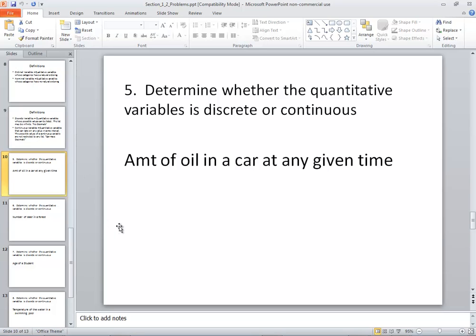Let's look at our first example here. Determine the quantitative variable is discrete or continuous. Amount of oil in a car at any given time. Are you always going to have 5 quarts? I was going to say 5 gallons. Obviously, I don't know very much about cars. Are you always going to have 5 quarts or 6 quarts of oil? No, it might be 5.2 quarts. And if you could measure it even finer, it might be 5.23. So you can see that it has decimals. This would be continuous.